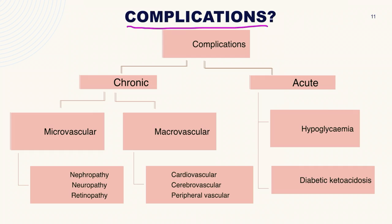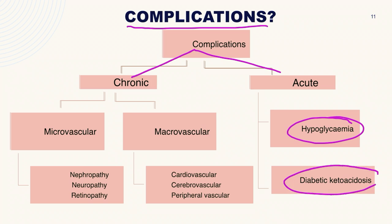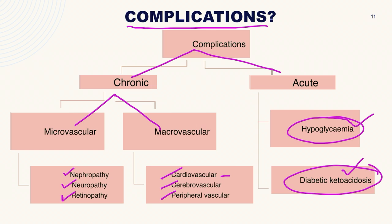Complications of diabetes mellitus are divided into acute and chronic. Under acute complications, over-treatment can lead to hypoglycemia, and lack of glucose control can lead to diabetic ketoacidosis. Chronic complications are divided into microvascular and macrovascular. Microvascular complications include nephropathy, neuropathy, and retinopathy. Macrovascular complications include cardiovascular disease causing coronary heart disease or heart attacks, cerebrovascular accidents causing stroke, and peripheral vascular disease causing conditions such as TAO.